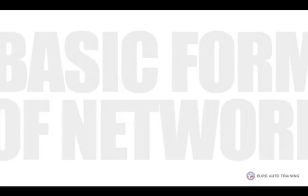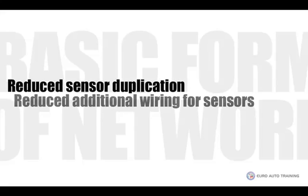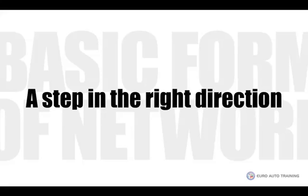This very basic form of networked system reduced the need for duplication of sensors and it did reduce the additional wiring that went with sensor duplication. So although there was additional wiring and cost, it would have been less than when there was also duplication of sensors. The obvious point, however, is that if there were many ECUs that required the same type of signal, it would not be viable to have numerous sensors doing the same job. Therefore, this simple form of networking was a move in the right direction.